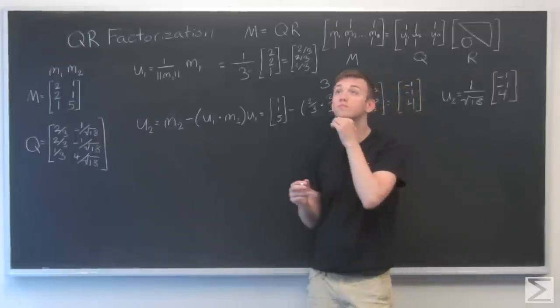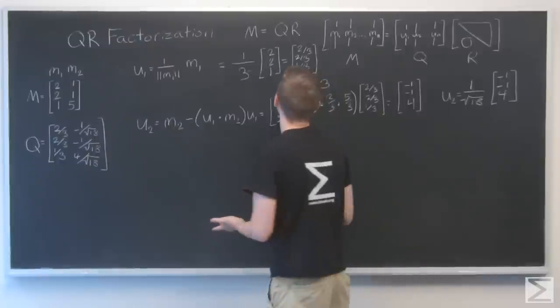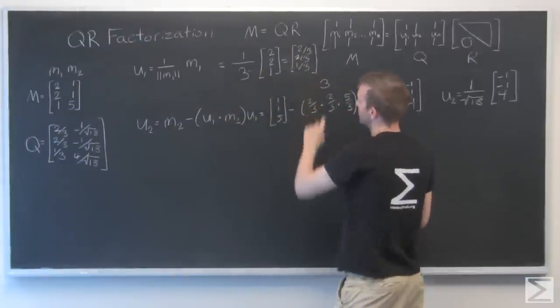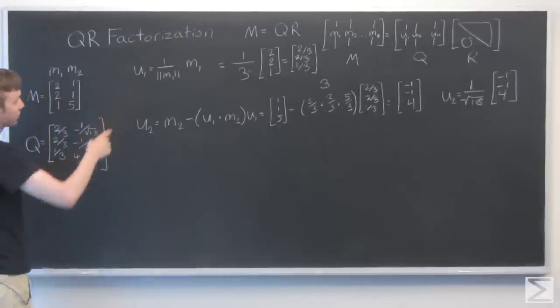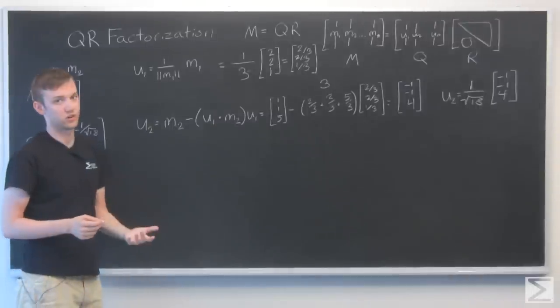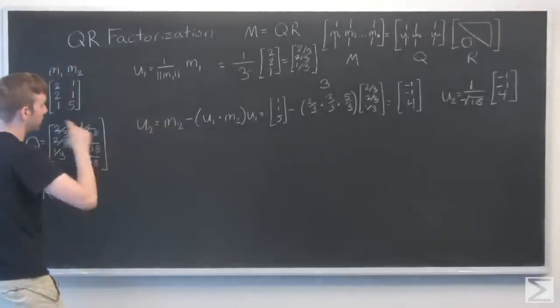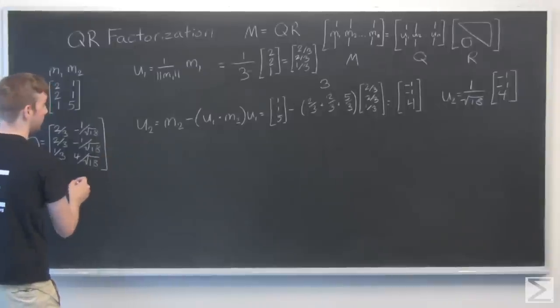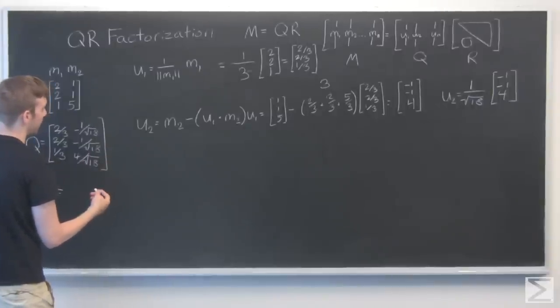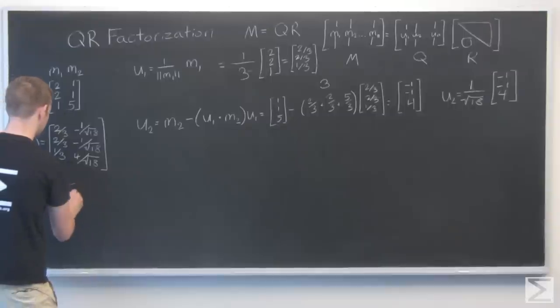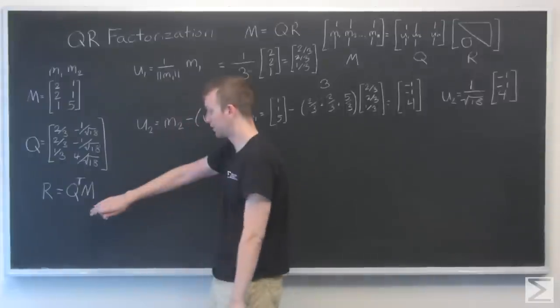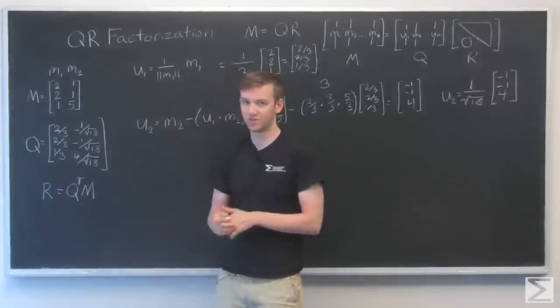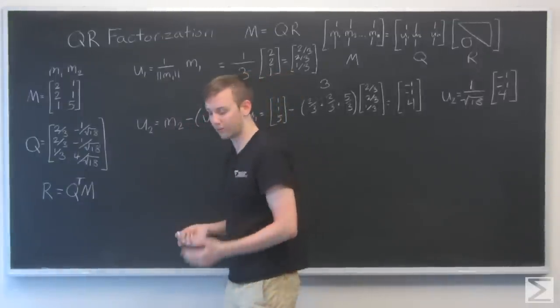And then there's the more of a brute force method, which is we've already found our Q, we've already found our M. So, to find our R, that's the same as if we solve for R in that equation by multiplying both sides by Q transpose. And Q transpose Q, because that is an orthonormal matrix, that'll give us just the identity matrix I. So, R will equal Q transpose M.